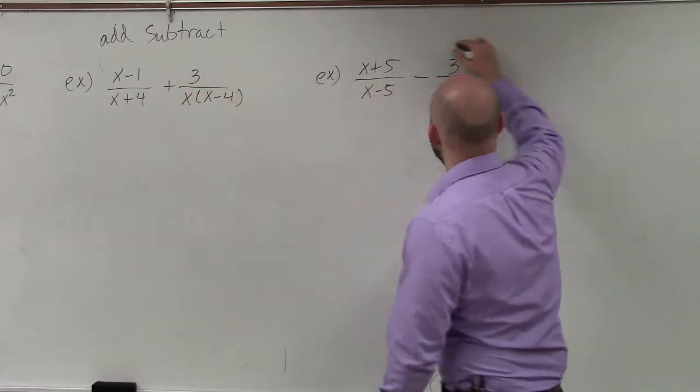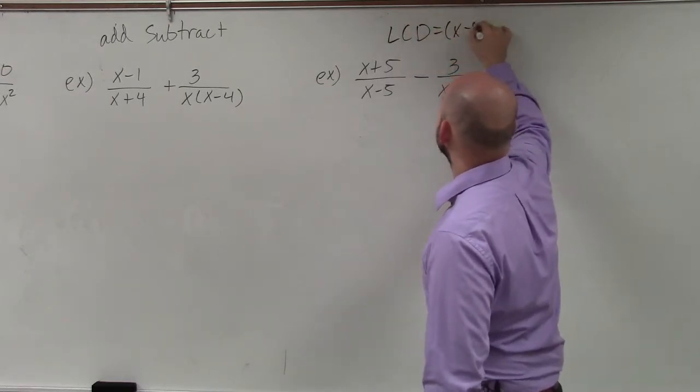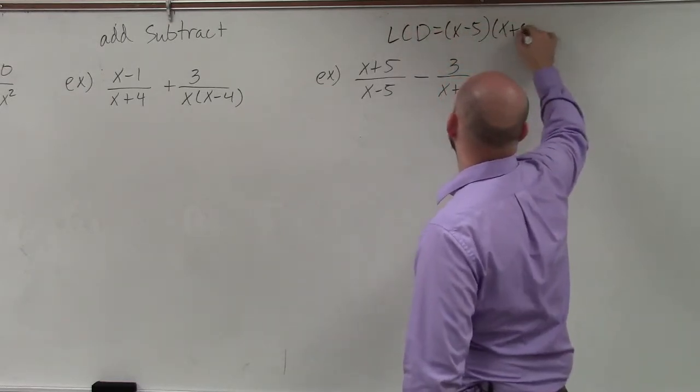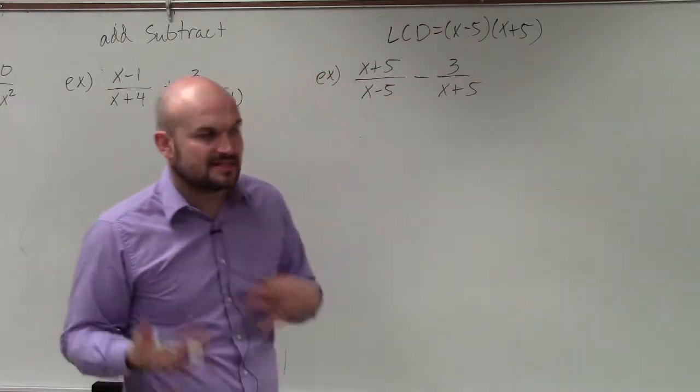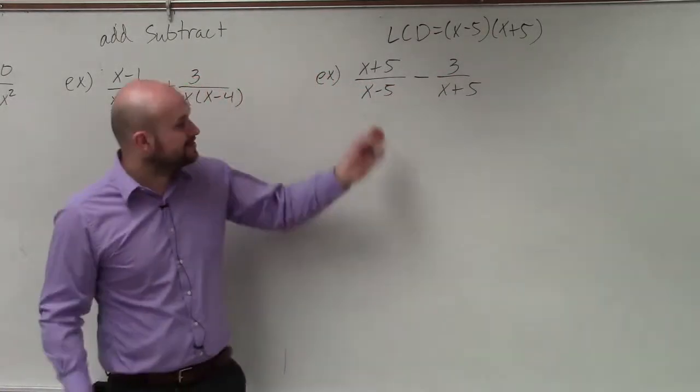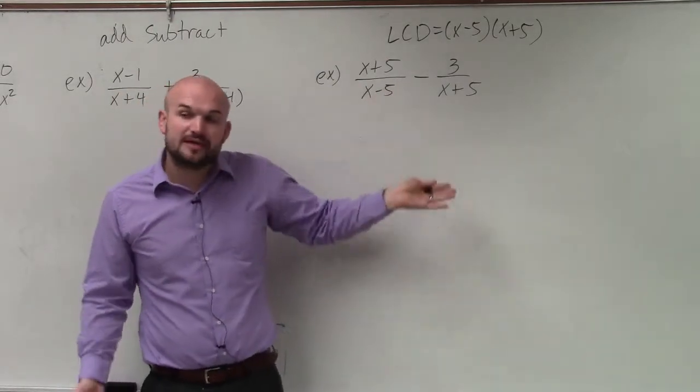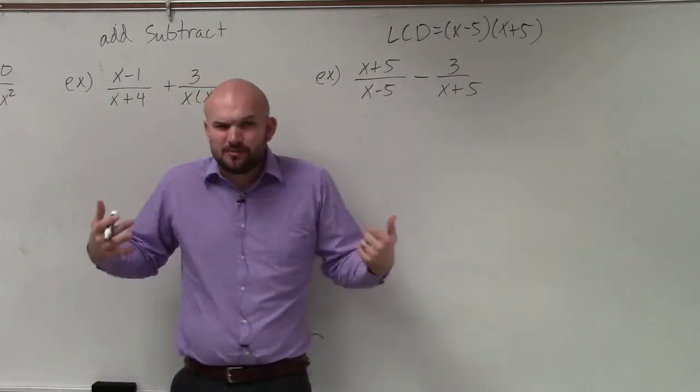So the common denominator here is x minus 5 times x plus 5. It's just going to be the product of our denominators. And with polynomials, that's mainly going to be the same case. You're just going to multiply your two denominators to find a common denominator, because polynomials is hard enough.